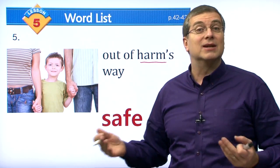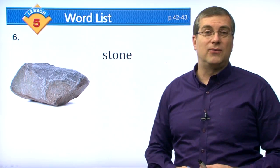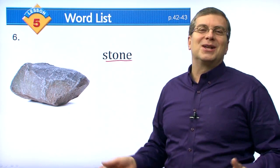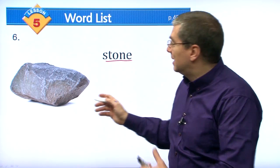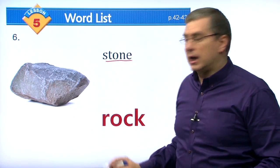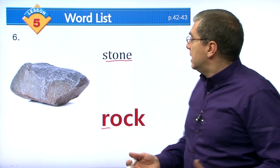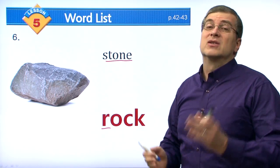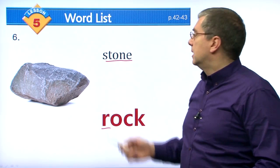We said a feather is very soft. Here we have an object — the word we have is 'stone,' and we're looking for another word that means the same as stone. Stone is very hard. What is another word? It's rock. A rock is very hard. Don't throw rocks, because if a rock hits you, it hurts — it's very hard and heavy. Do not throw rocks at other people. That's very dangerous.